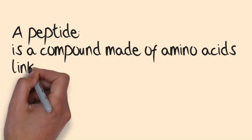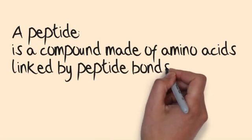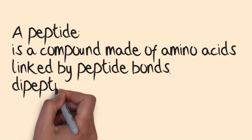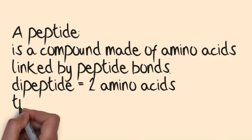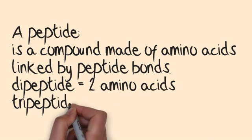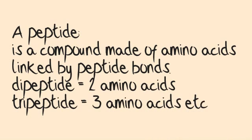A peptide is a compound made of amino acids linked by peptide bonds. A dipeptide equals two amino acids. A tripeptide equals three amino acids, etc.